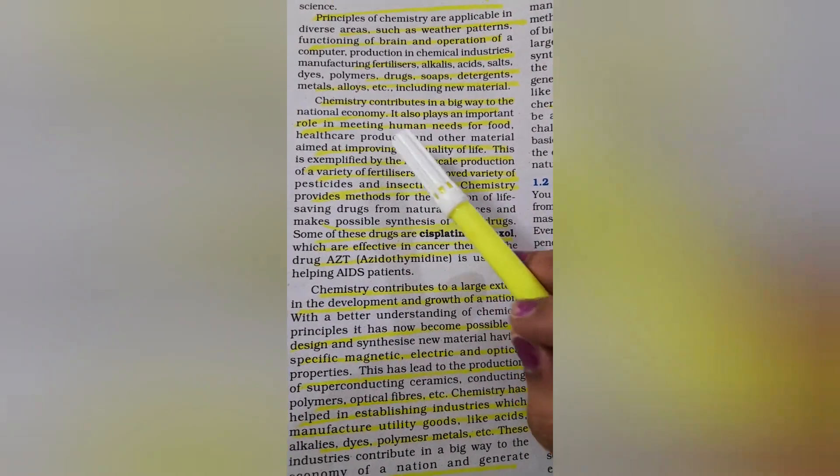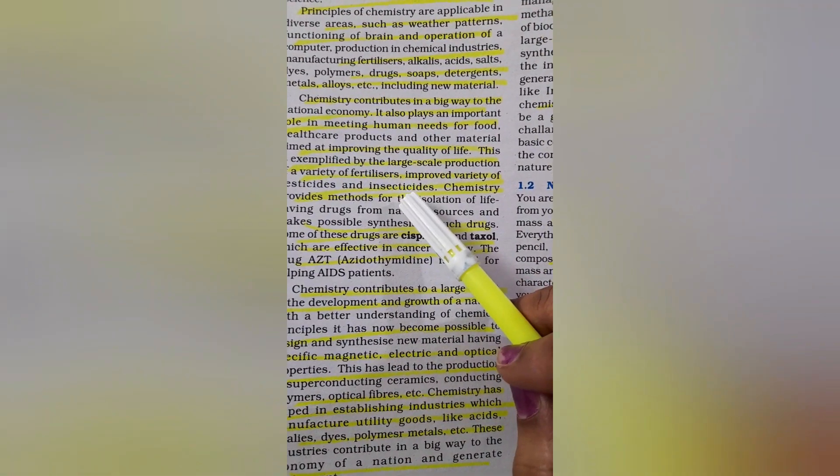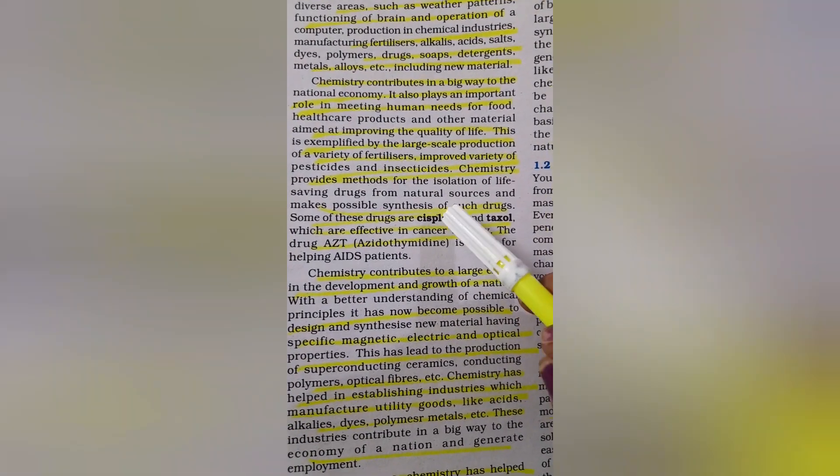Chemistry makes a big contribution to our national economy and plays an important role in meeting human needs for food, healthcare products, and other materials aimed at improving the quality of life. This is exemplified by the large-scale production of a variety of fertilizers, improved pesticides, and insecticides. With the help of chemistry we can get better yield of products and destroy pests.